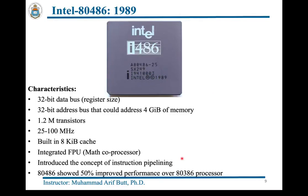In 1989 Intel introduced the 486, with an 8 KB on-chip cache, an internal enhanced floating-point coprocessor, and a 5-stage instruction pipeline. It is generally accepted that at the same clock speed the 486 showed 50% improved performance over the 386 processor. Instruction pipelining is a technique for implementing instruction-level parallelism within a single processor. I will try to make a separate video on pipeline processors in this course as well.